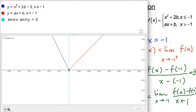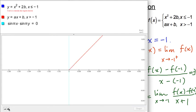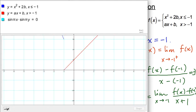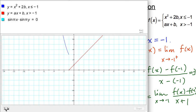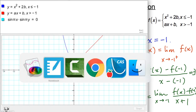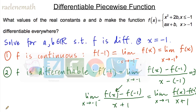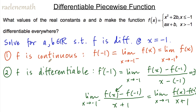I'm going to remove that adjustment I made and go back to my graph. We want to work backwards using the conditions that f is continuous and f is differentiable to come up with two equations to solve for the two unknowns.